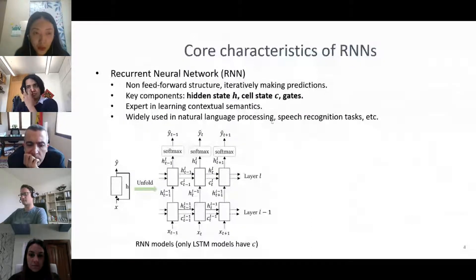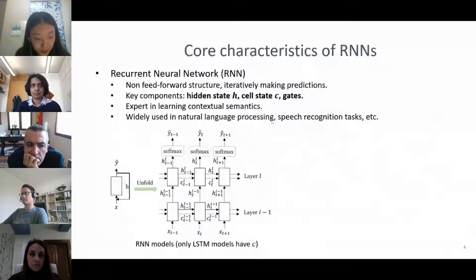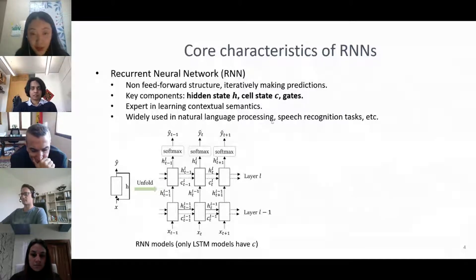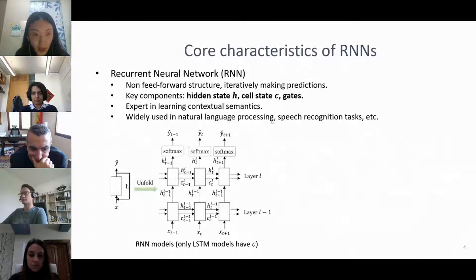For recurrent neural networks, it's not a feedforward structure. RNN models iteratively make predictions given inputs. RNN includes three key components: hidden state H, cell state C, and gates. For different RNN models they share a similar structure, while only LSTM models have cell states. The main difference of RNN models is the cell. LSTM and GRU introduce multiple gates for keeping context information and have become mainstream RNN models.